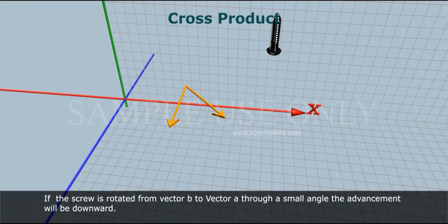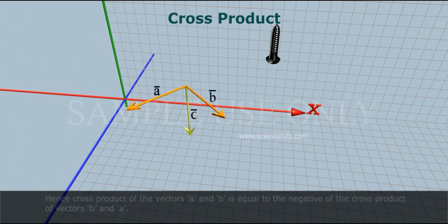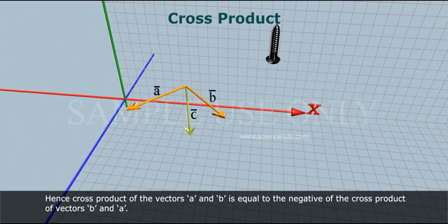If the screw is rotated from vector B to vector A through a small angle, the advancement will be downward. Hence, the cross product of vectors A and B is equal to the negative of the cross product of vectors B and A.